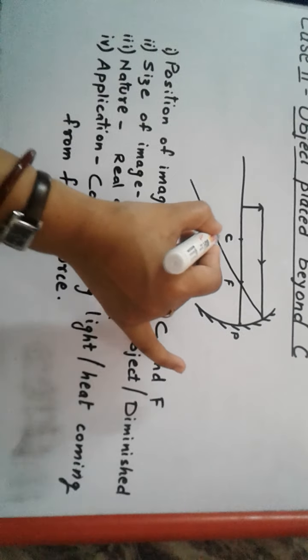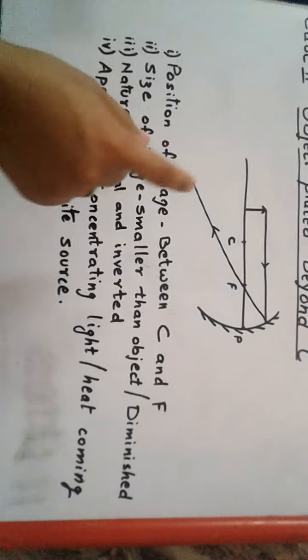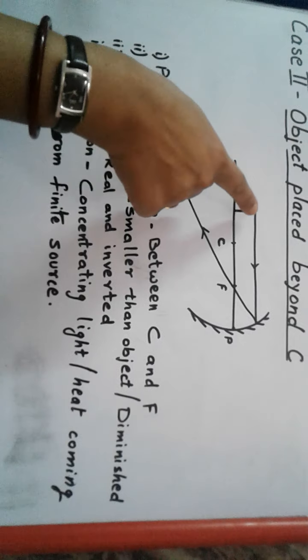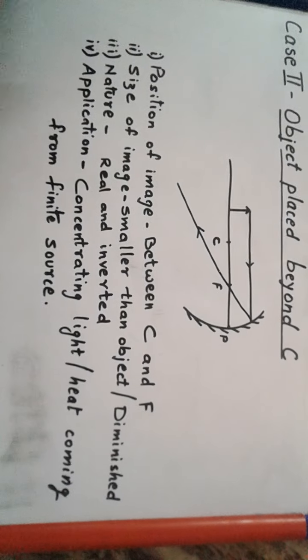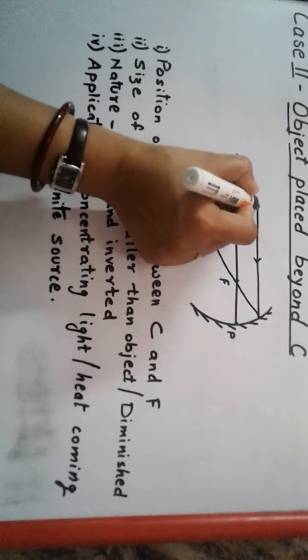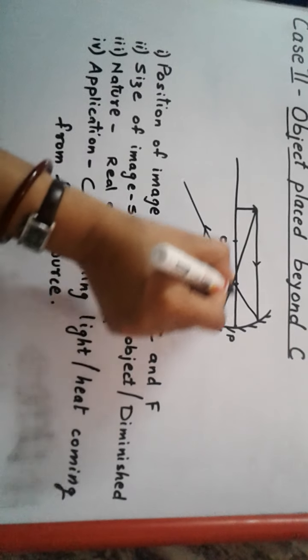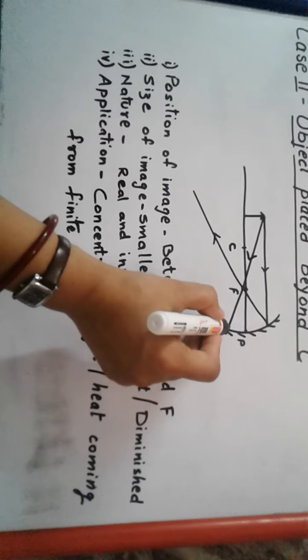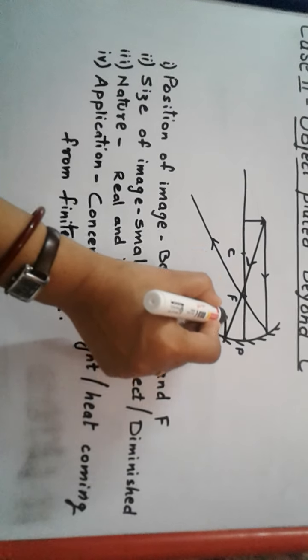These are the arrows. Now for the second ray, the second ray will pass through the focus. This is the second ray which is passing through the focus, and after reflection it will become parallel to the principal axis.